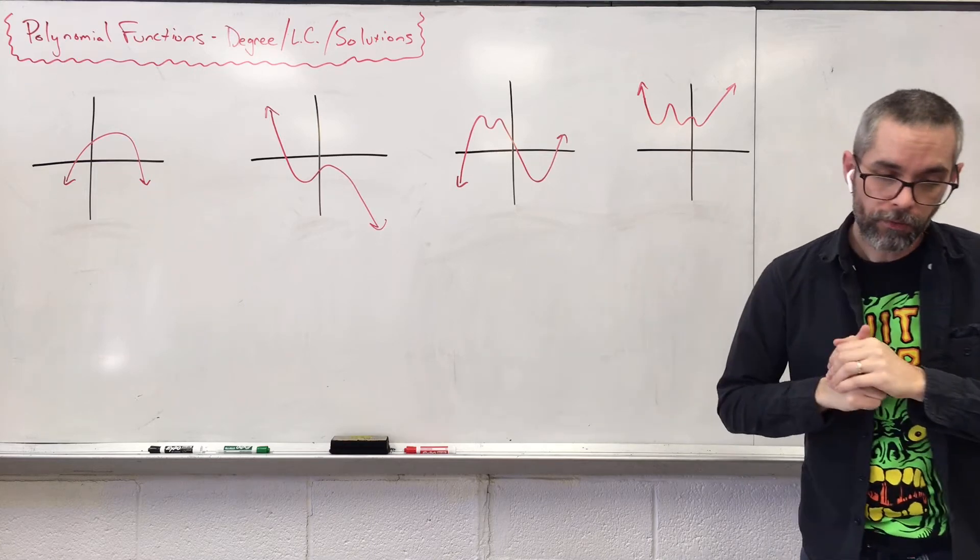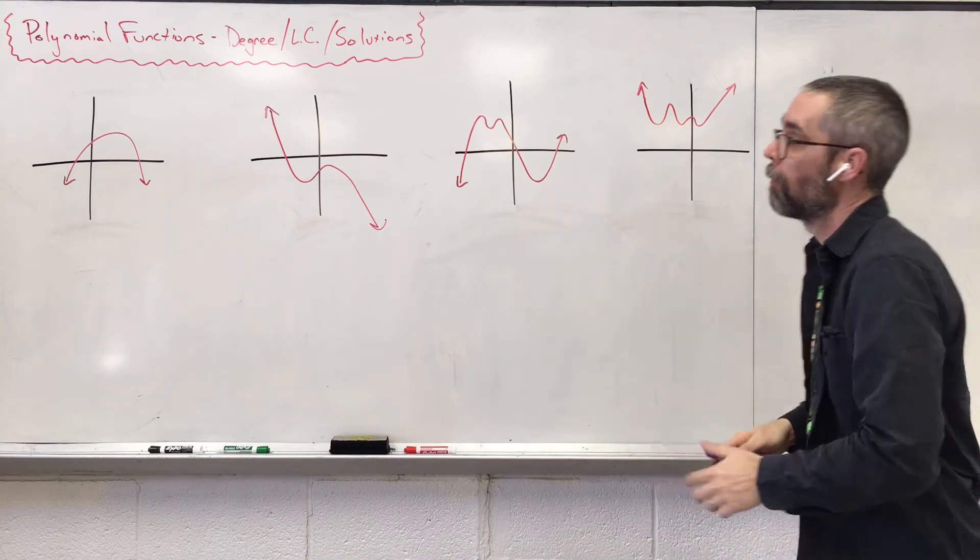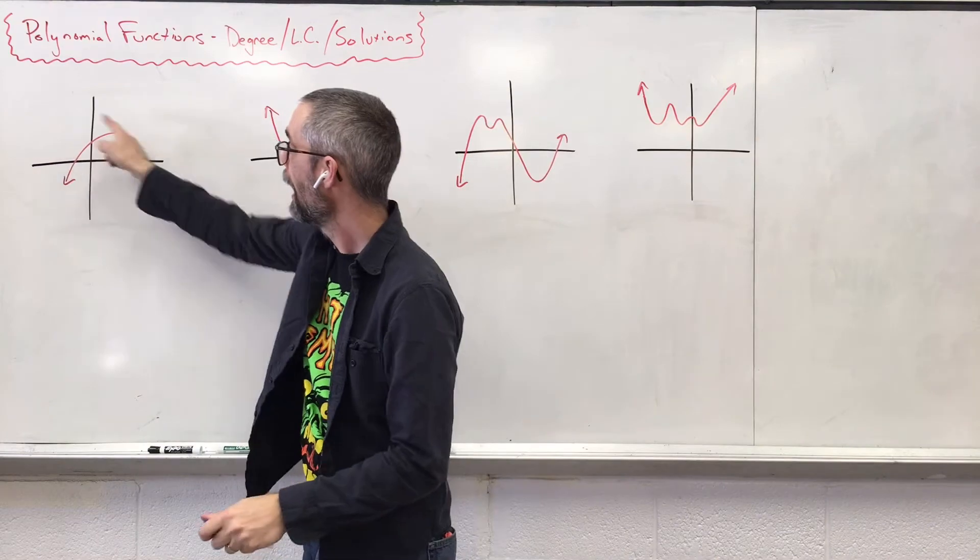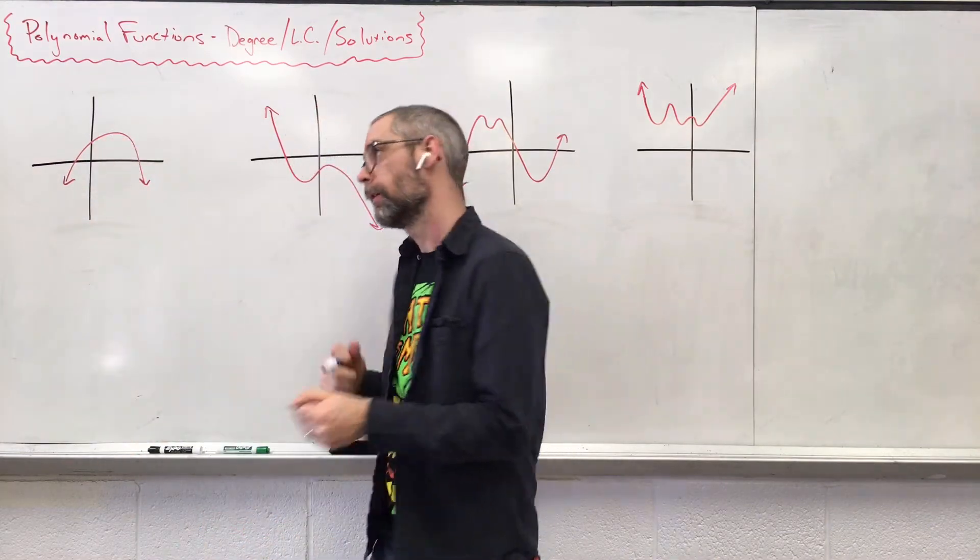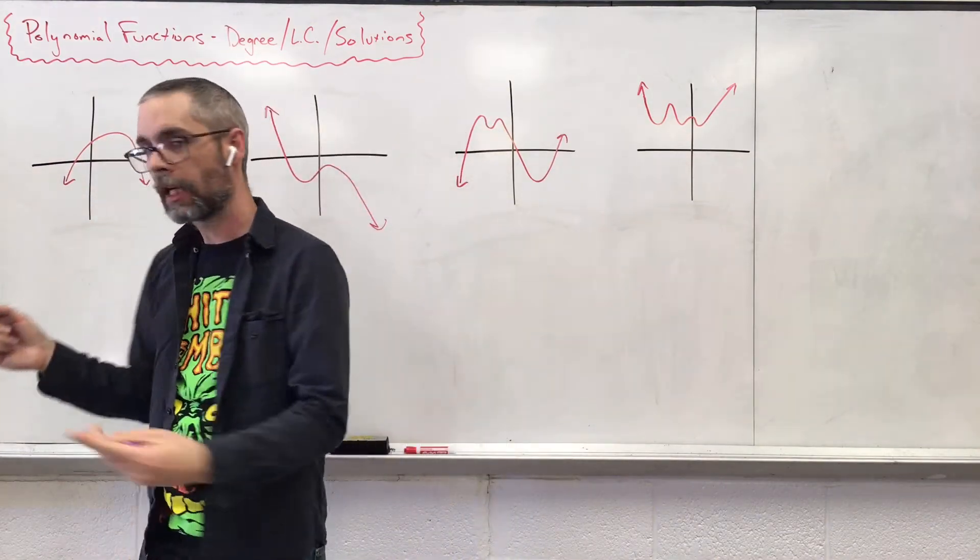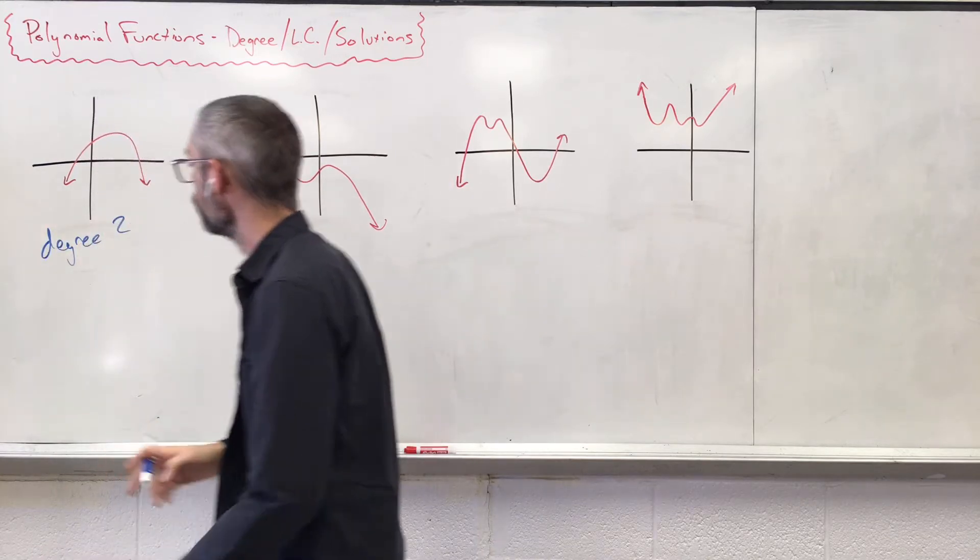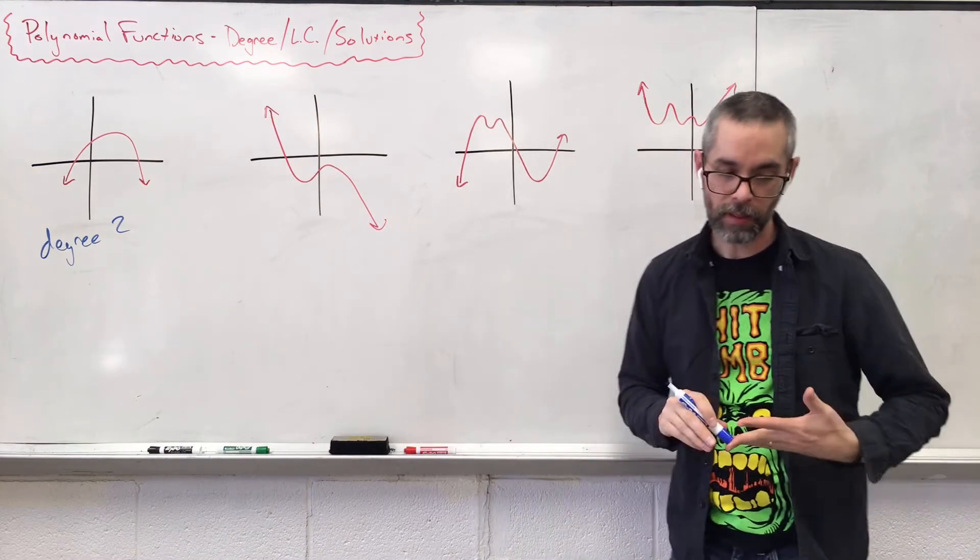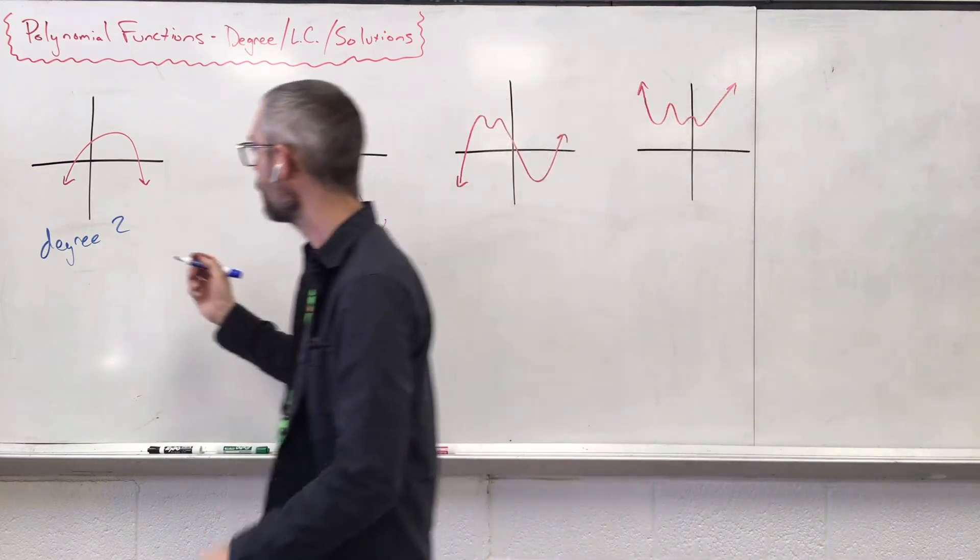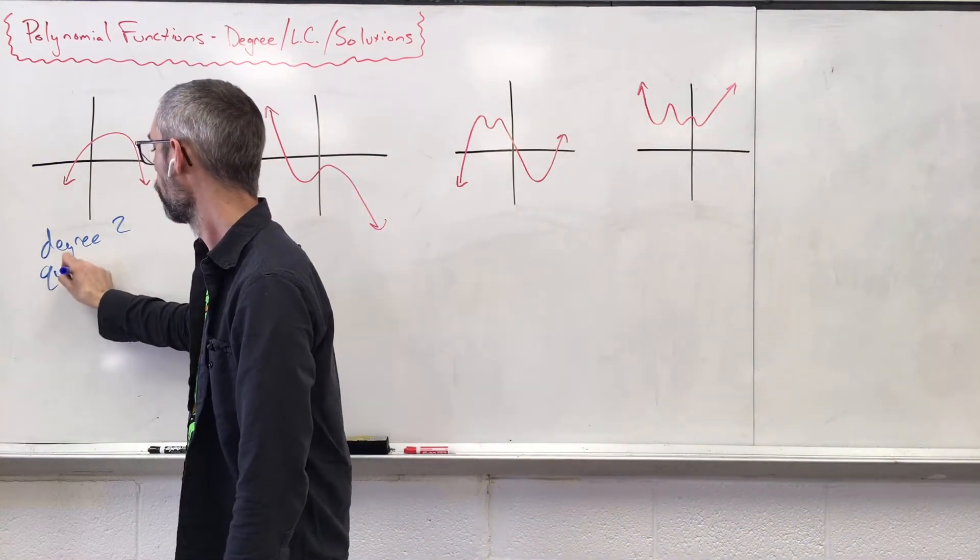So first off, I want to figure out what's the degree of my problem. Here I have a parabola. A parabola is always going to be an exponent of two, so we know that this is degree two. Can we name this by the degree? Sure, anything with degree two is quadratic.